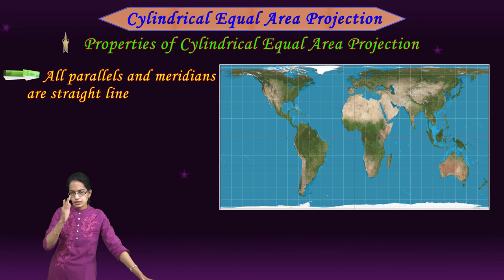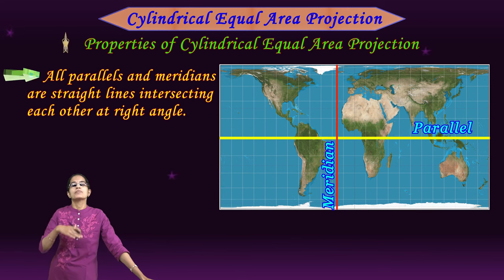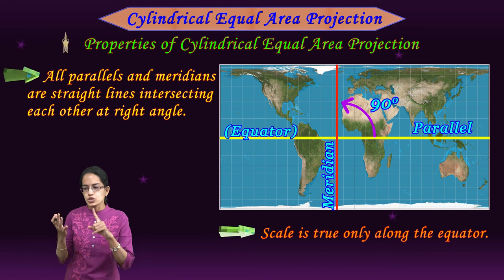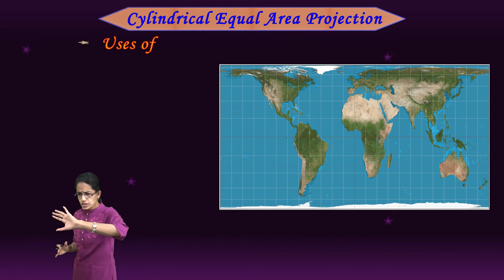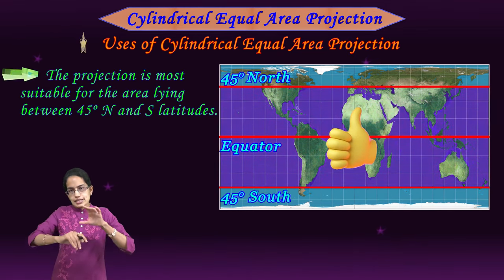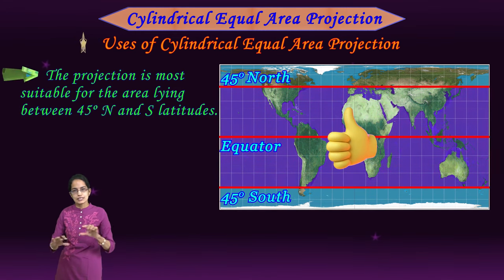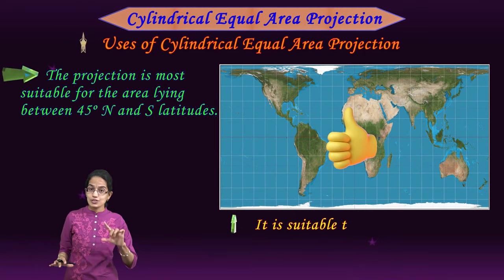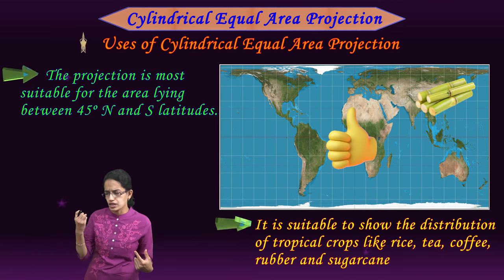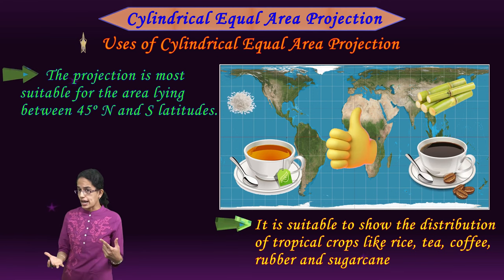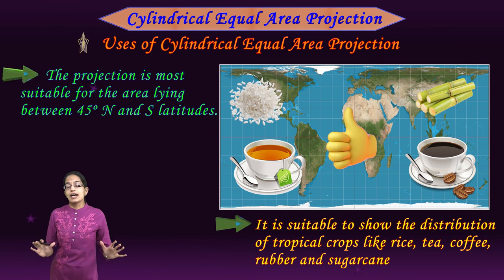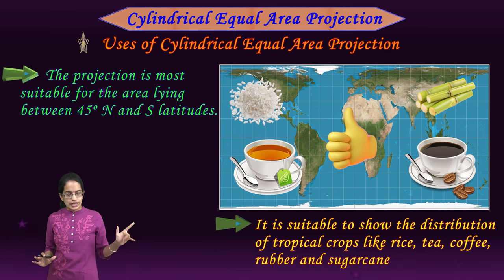All parallels and meridians are straight lines cutting at 90 degrees, and the scale is true only at the equator. This projection is best for regions at 45 degrees north and south, where maximum characteristics are maintained. Therefore it is suitable for showing crop distributions of vegetation like sugarcane, tea, coffee, maize, and rice, which mainly grow in regions between 45 degrees north and south.